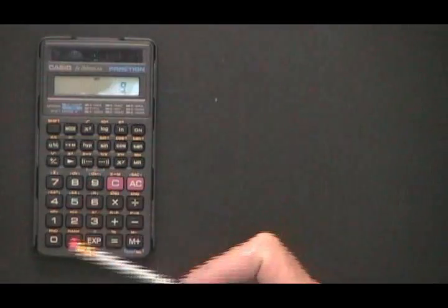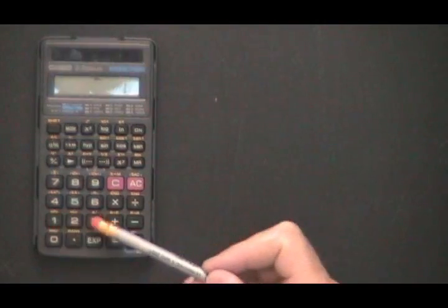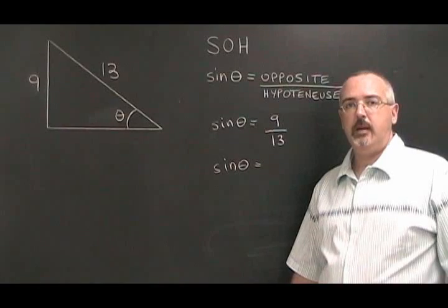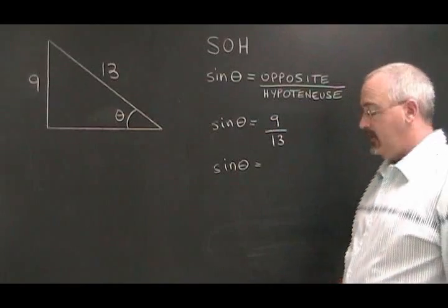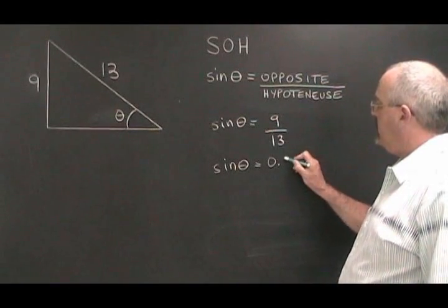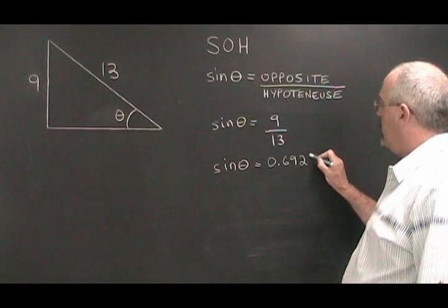9 divided by 13 is equal to 0.6923. Since 9 divided by 13 is equal to 0.6923, we replace it with that number in our equation.